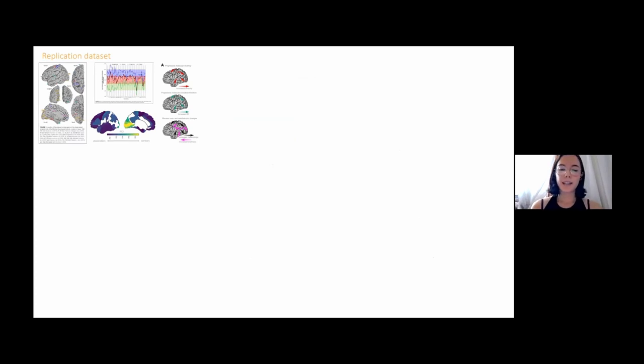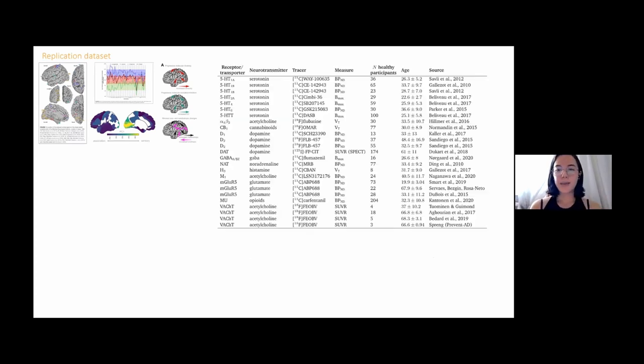Instead, what I did was I contacted a bunch of people and started collecting a lot of PET data. Full disclosure, I did not collect any of this PET data myself. They're coming from different groups, different acquisition protocols. But because of that, we z-score all of the tracer maps, and they are following the best practice guidelines for each radioligand separately. In the end, we collected a whole bunch of these PET tracers in generally young, but all healthy controls.